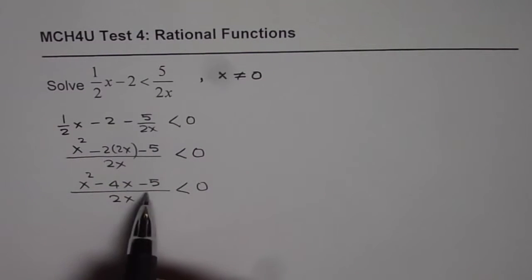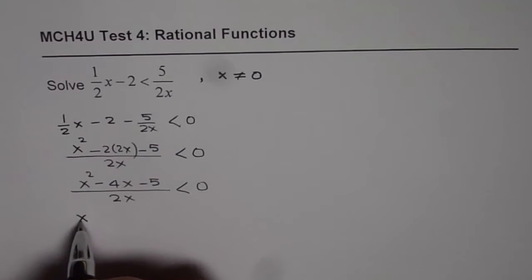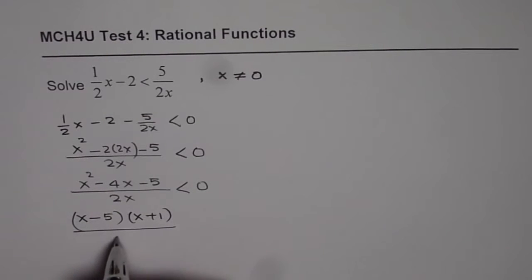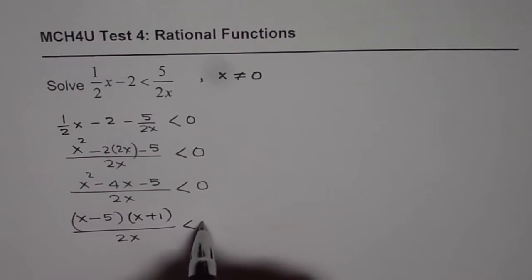Now, that's a quadratic equation which can be factored. We need product of minus 5, sum of minus 4. So, it could be written as (x minus 5)(x plus 1) divided by 2x as less than 0.